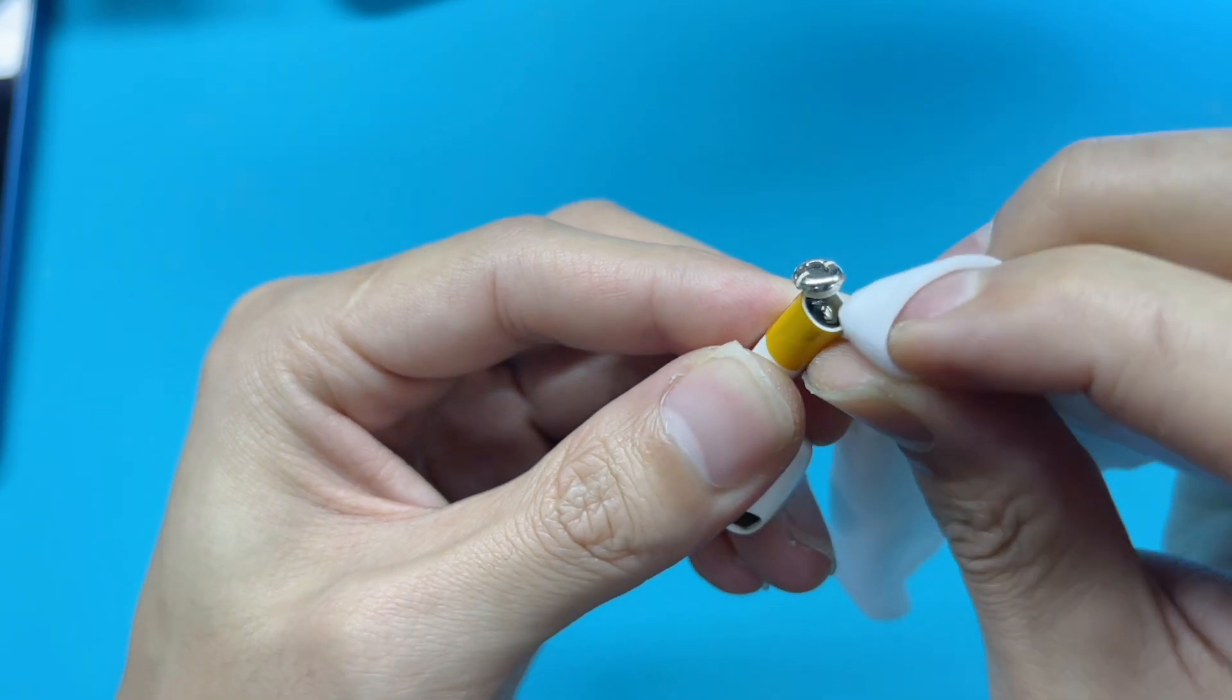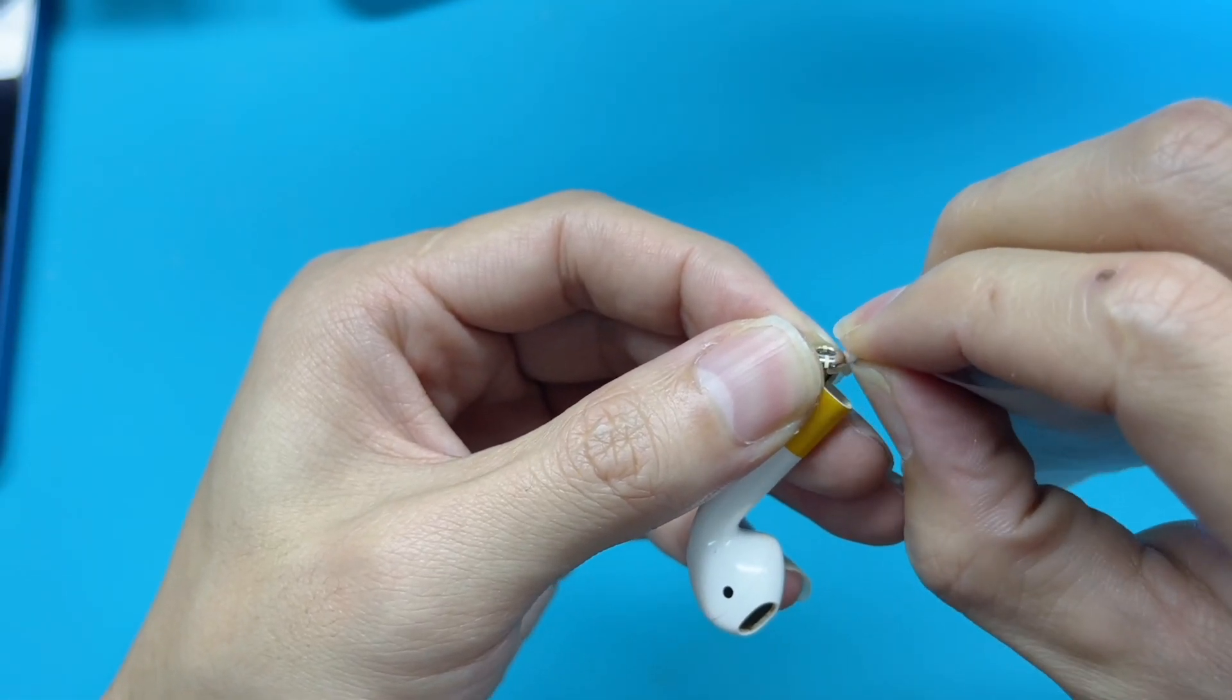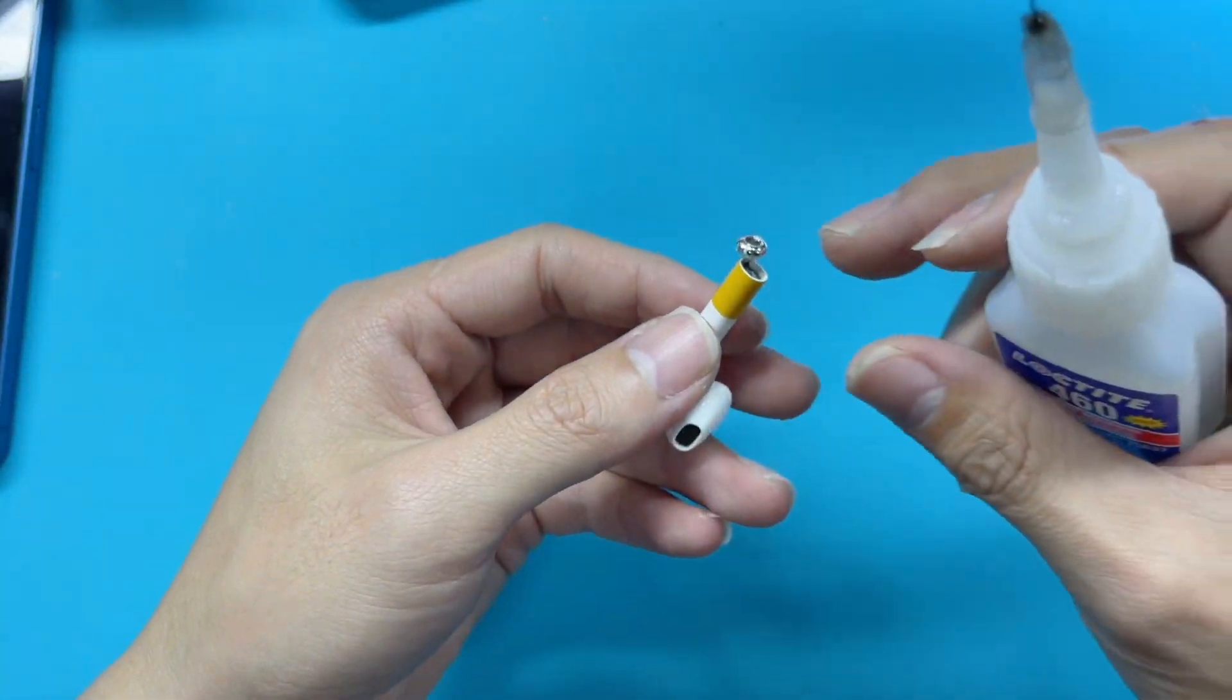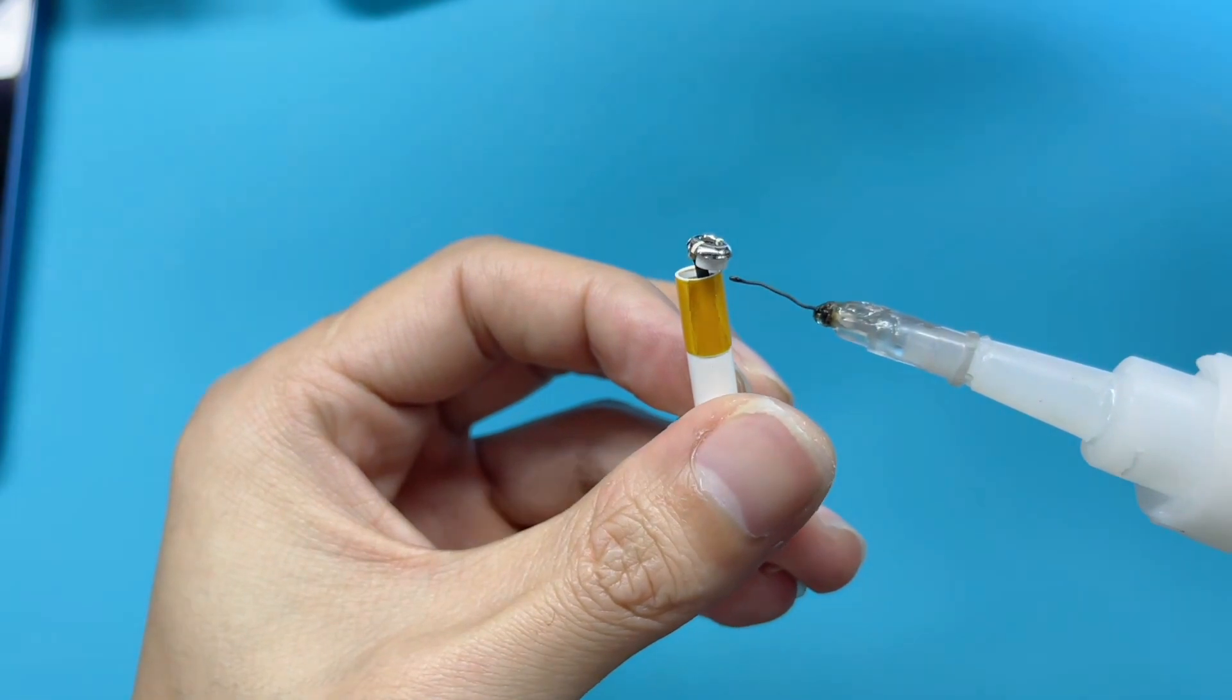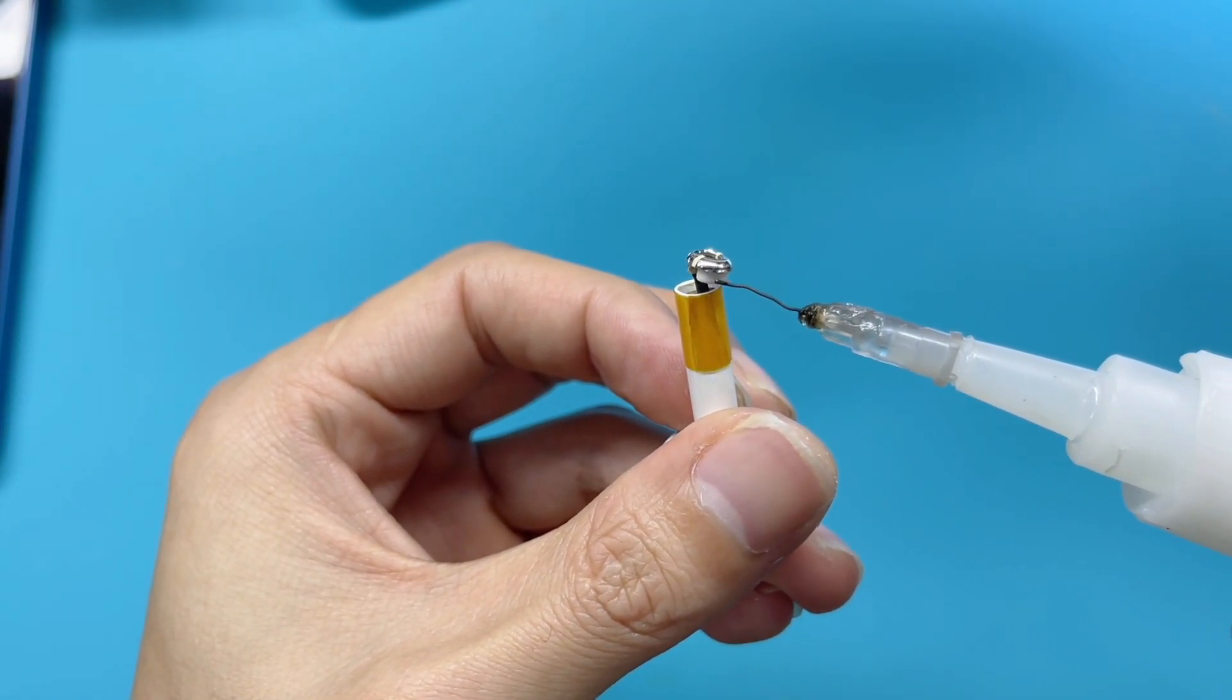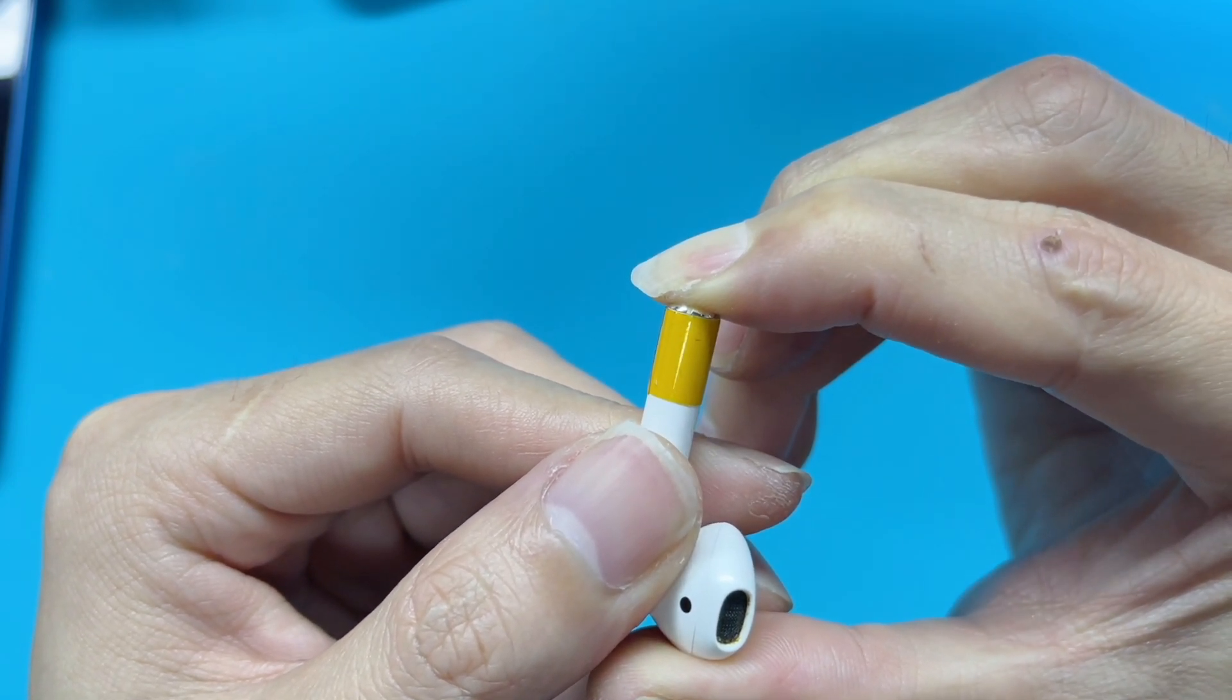Next, let's clean up the bottom cover and then add the glue. Press it down and wait a while until the glue is completely set.